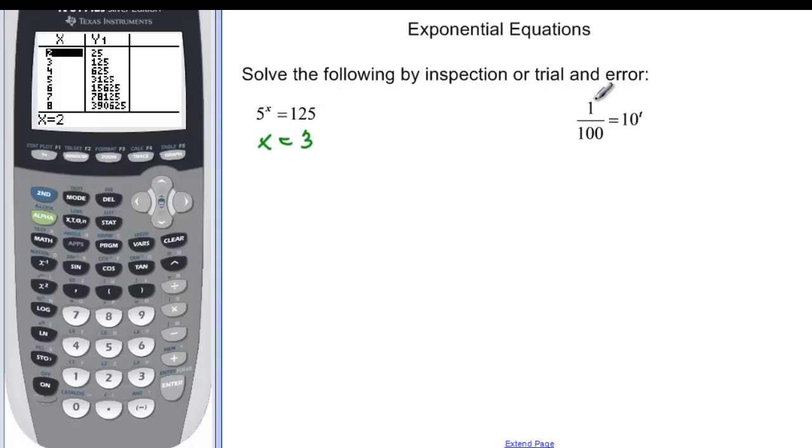Now if we look at this one, 1 over 100, that would be a little bit harder to see in our calculator, although we know what that decimal is. But if you think about it, let's think about this intuitively. This is a base of 10 with my exponent, and on the other side I have 1 over 100. And you could think of this as the same thing as 1 over 10 squared is equal to 10 to the t.